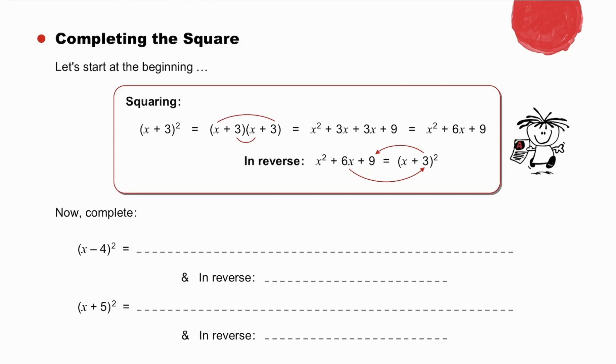Now complete these squares, (x - 4)² and (x + 5)², and then do each of them in reverse.